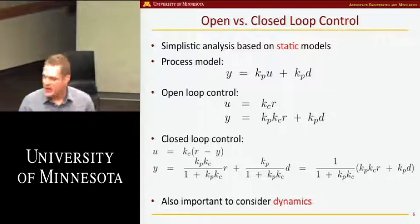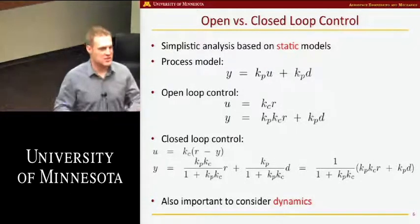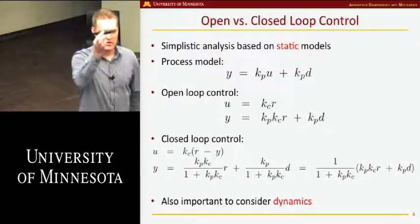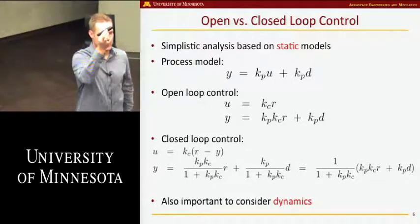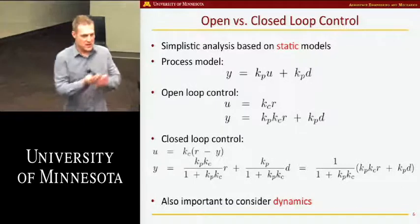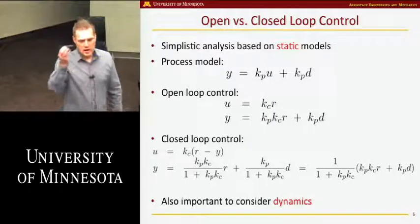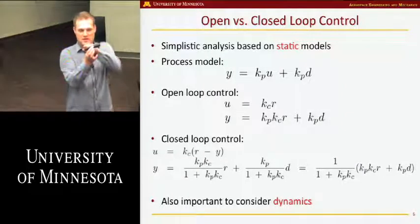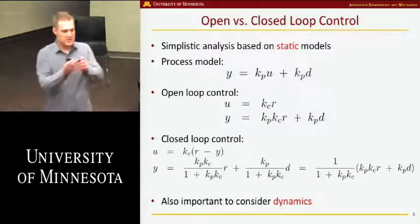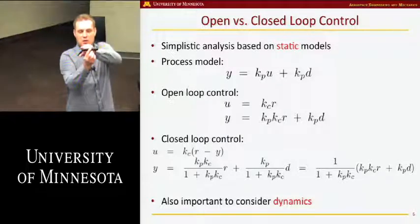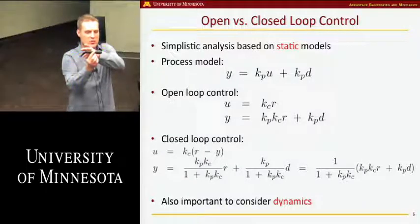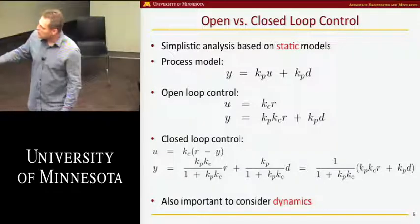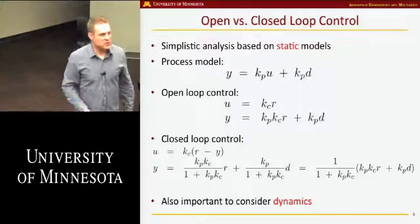Let me give you a very simple example to highlight the difference. We'll look at a simple static model — think of a resistor in an electrical engineering context or a simple lever in a mechanical engineering context. U is a control input I'm going to apply, Y is the corresponding output I'm going to obtain, and D is a disturbance trying to compromise the results I want to achieve. Y is the output — how much this lever moves when I push it. D is something outside my control, like weight on one end of a lever. U is the control I'm applying — how much I push the lever.